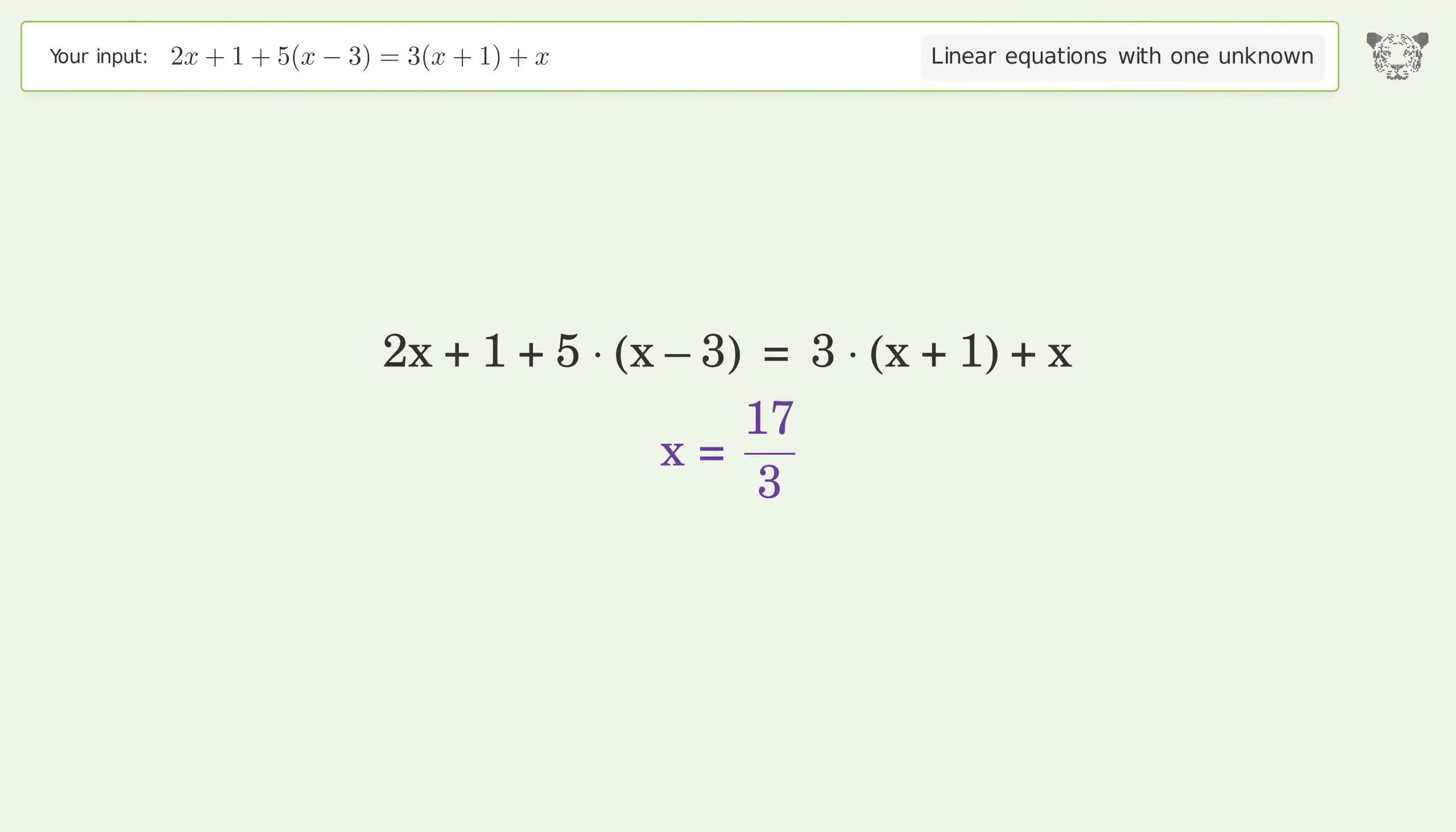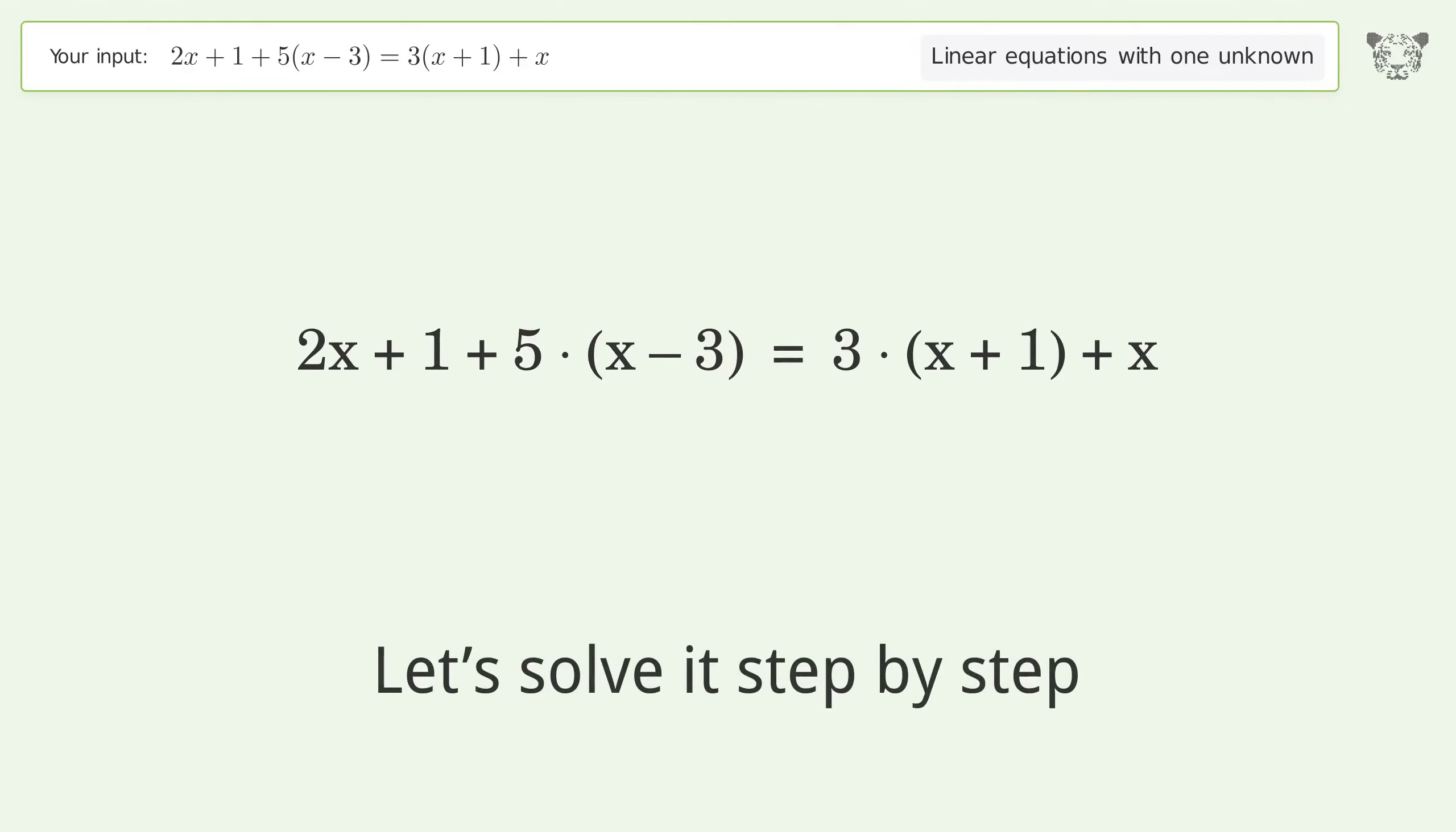You asked Tiger to solve this linear equation with one unknown. The final result is x equals 17 over 3. Let's solve it step by step.